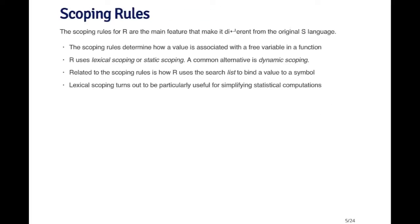This leads us to the scoping rules for R, which I think are the main feature that makes it different from the original S language. The scoping rules determine how a value is bound to a free variable in a function. Inside a function there are two types of variables: the formal arguments passed through the function definition, and other symbols found in the function body that are not function arguments. R uses what's called lexical scoping, or static scoping — a common alternative to dynamic scoping — and lexical scoping is particularly useful for simplifying statistical calculations.